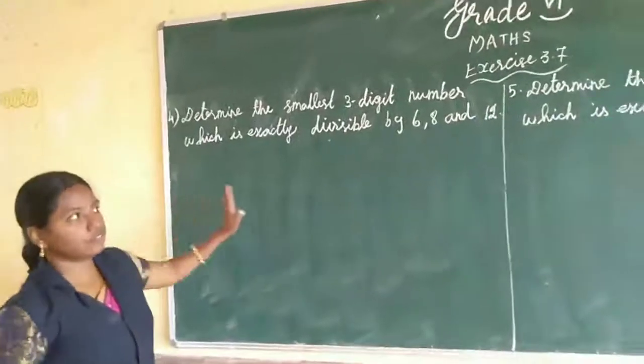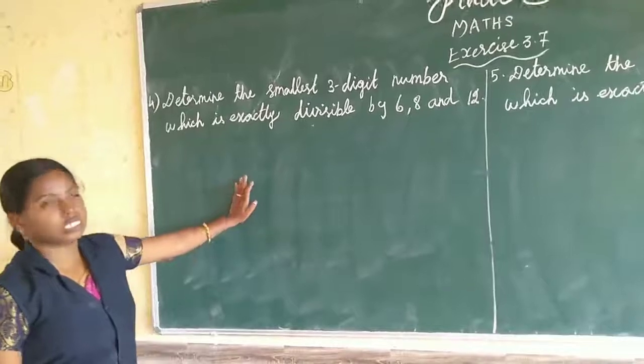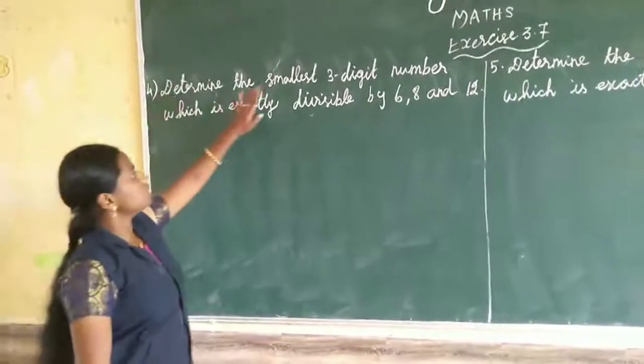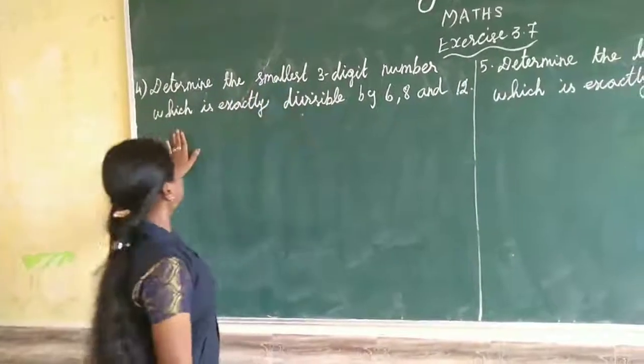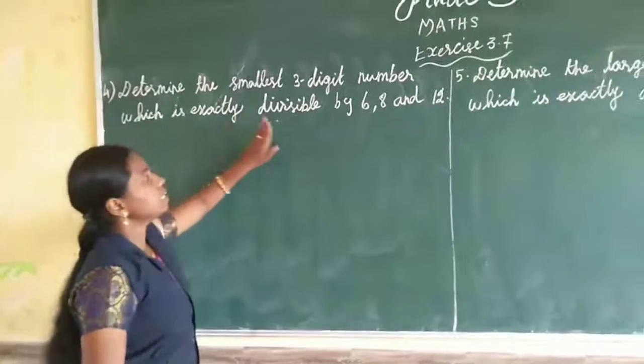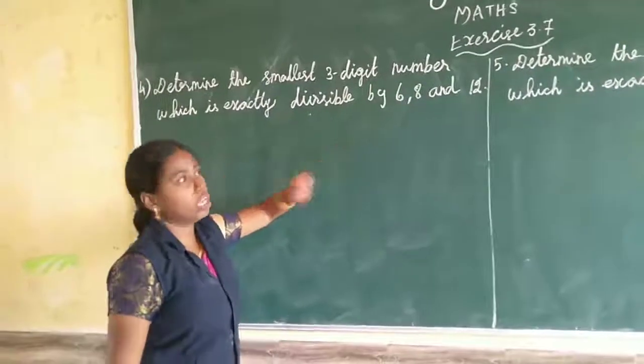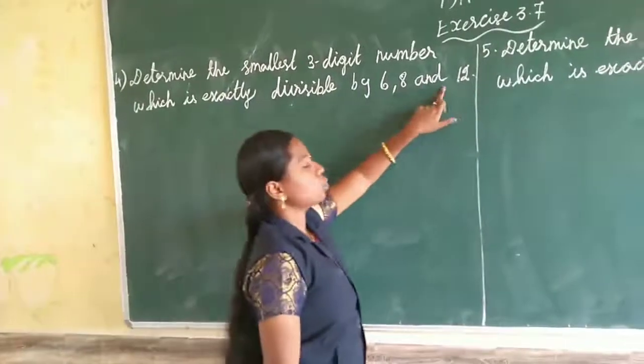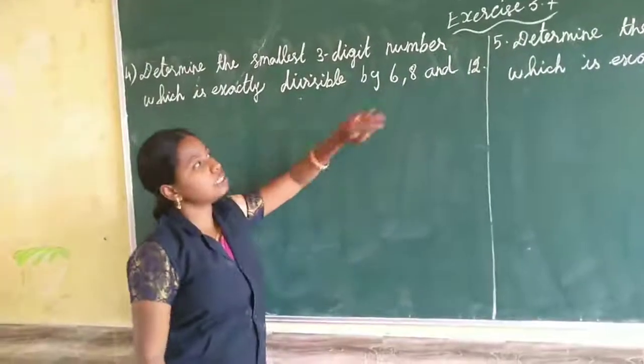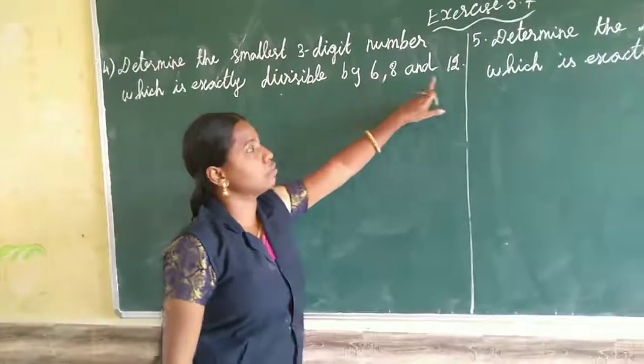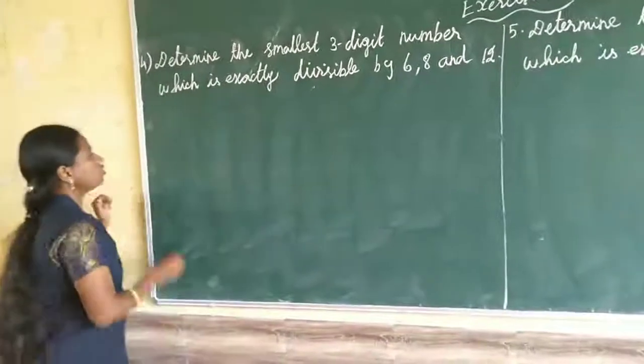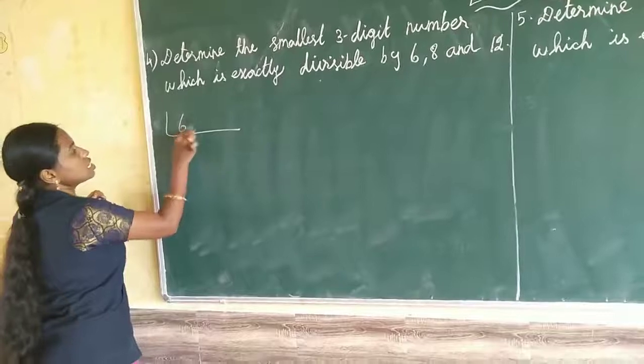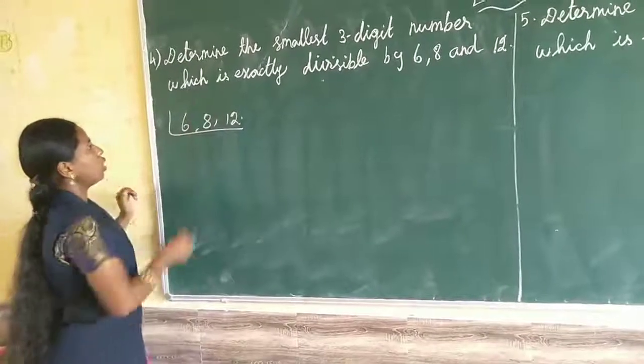Now, fourth sum. Determine the smallest three digit number which is exactly divisible by 6, 8 and 12. For the smallest three digit number, we will find out the LCM of 6, 8 and 12 first. If you find the LCM, then we will find three digit numbers.